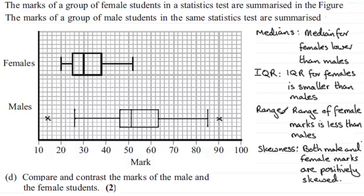Or you could look at the range. The range of female marks is less than that of the males. The range for the female marks was from here to here, whereas for males it was from this value here to this value here.